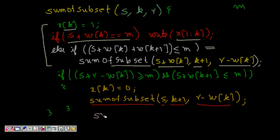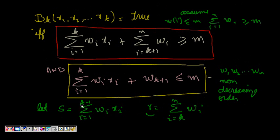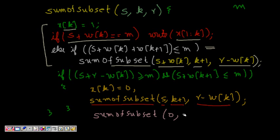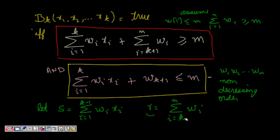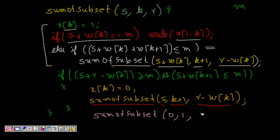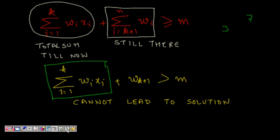For the initial call, we start with k=1, s=0 (no elements chosen yet from index 1 to k-1 since k=1), and r equals the total summation of all elements from i=1 to n. So the initial call is sum_of_subset(0, 1, total_sum).